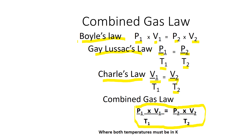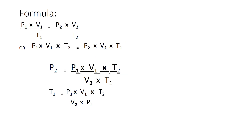All temperatures must be in Kelvin. The general formula is P1V1 over T1 equals P2V2 over T2. It will be easy to derive the equation for the unknown by cross-multiplying, giving us P1 times V1 times T2 equals P2 times V2 times T1.